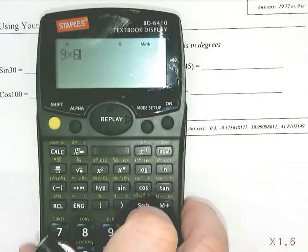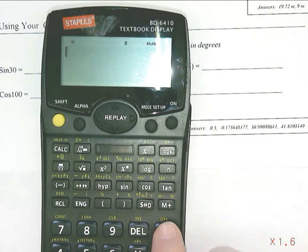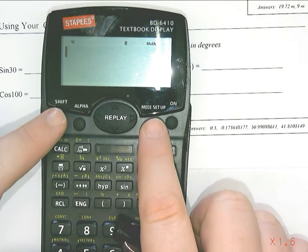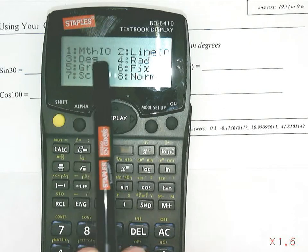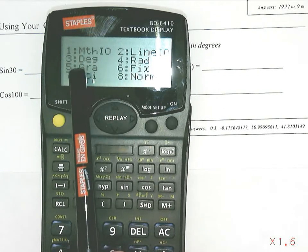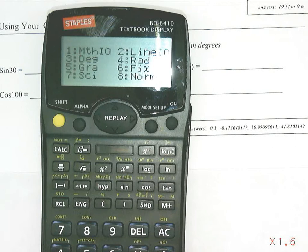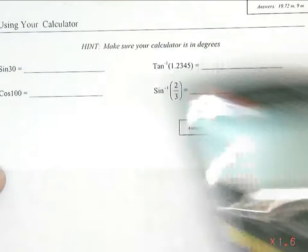Now this calculator is a little bit trickier. For this one, I have to do shift and mode, and then it will bring up a wide variety of things to choose. And to put it into degrees, I'm going to pick the number three.